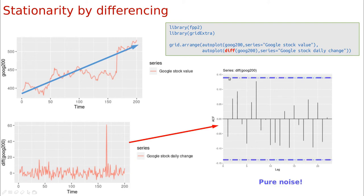I will explain the dashed blue lines in another video, but basically anything between these blue lines can be considered as pure noise. So here, this means that the stock market is pure noise. Actually it's more complicated than that because sometimes we have these jumps in the data, but overall the data is completely uncorrelated.